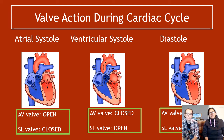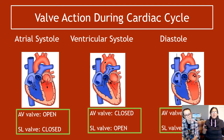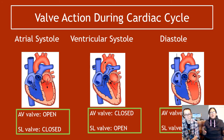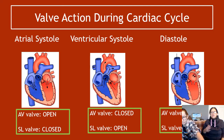During ventricular systole, blood is going from the ventricle out of the heart. The AV valve is going to be closed because you don't want blood going back into the atrium. The semilunar valves are going to be open because you want the blood to go into whatever artery it needs to go to, to exit the heart.